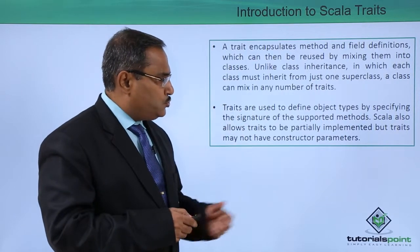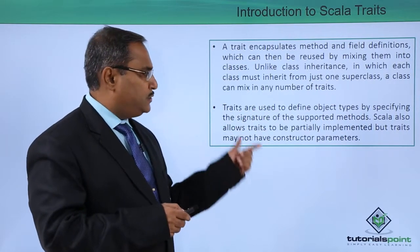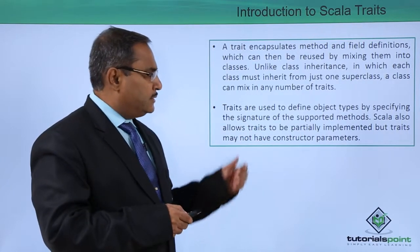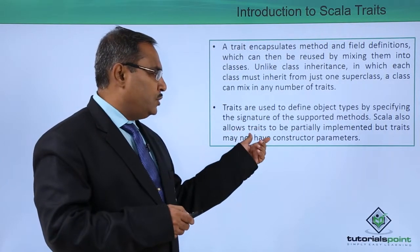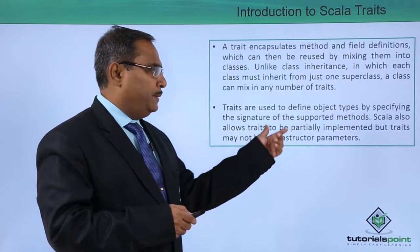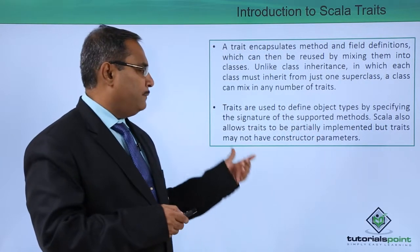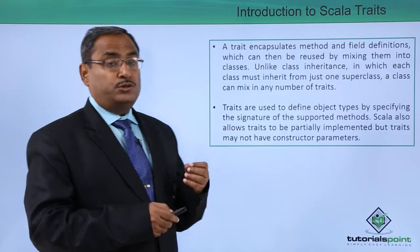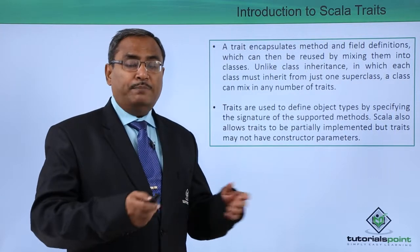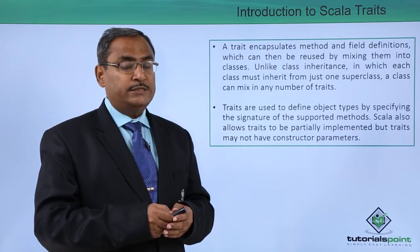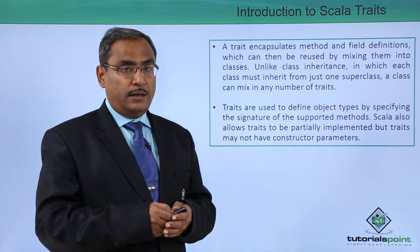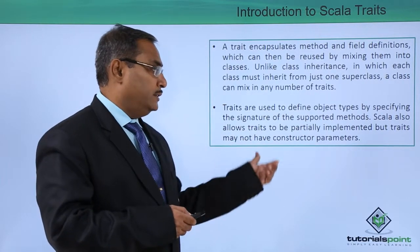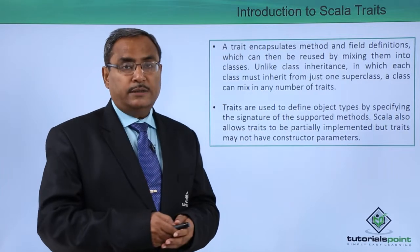Traits are used to define object types by specifying the signature of the supported methods. Scala also allows traits to be partially implemented, but traits may not have constructor parameters. Some methods may have a body with implementation, and some methods will not have the implementation body, but a trait cannot have constructor parameters.